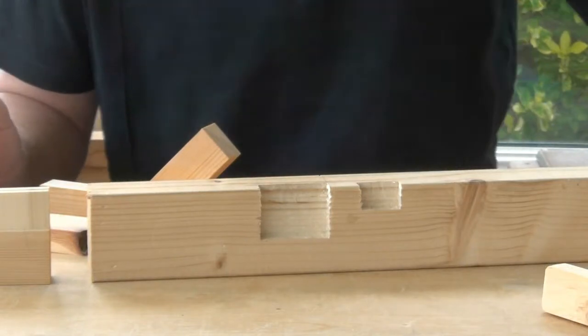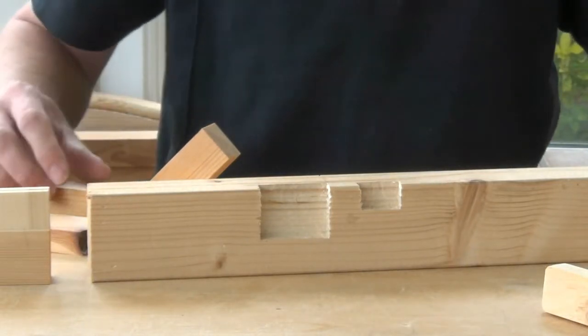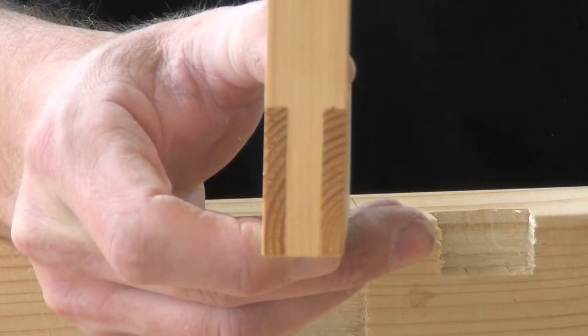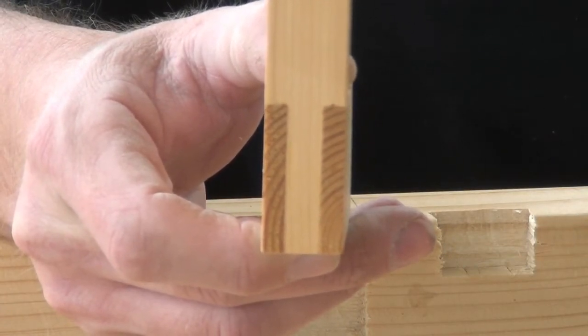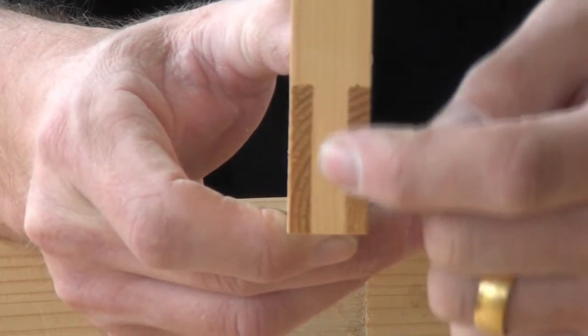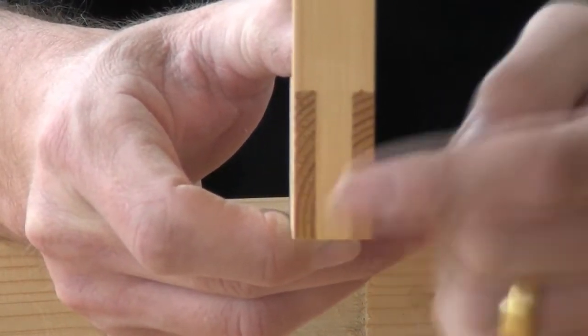There are lots of different types of mortise and tenon joints. This shows a cutaway of a through mortise and tenon joint, where you can see the tenon passing right through the two mortise walls.